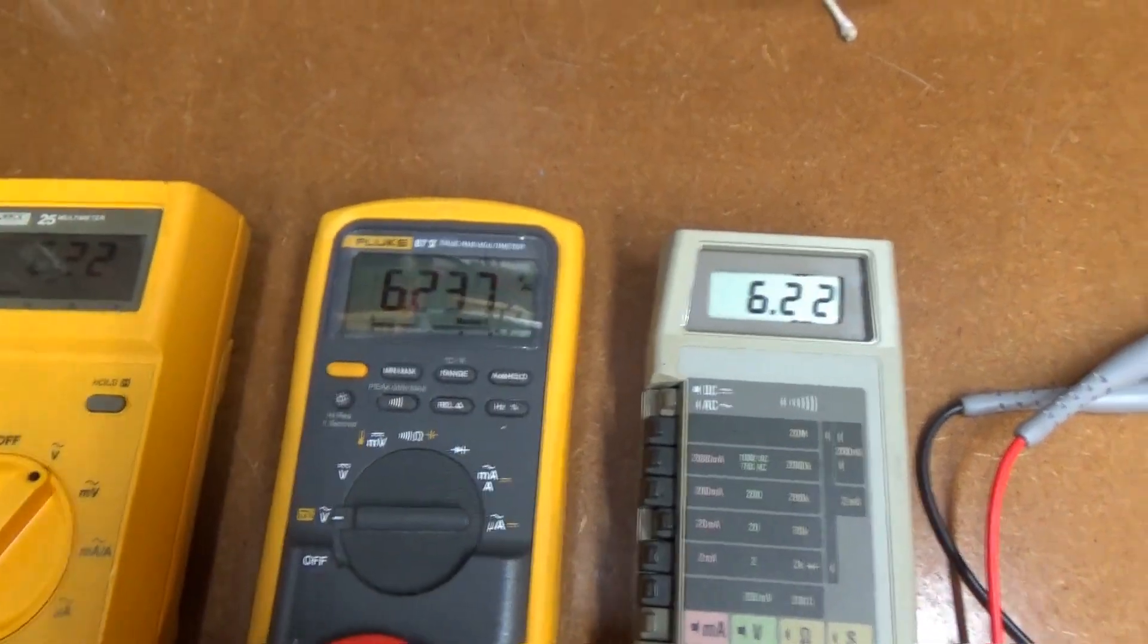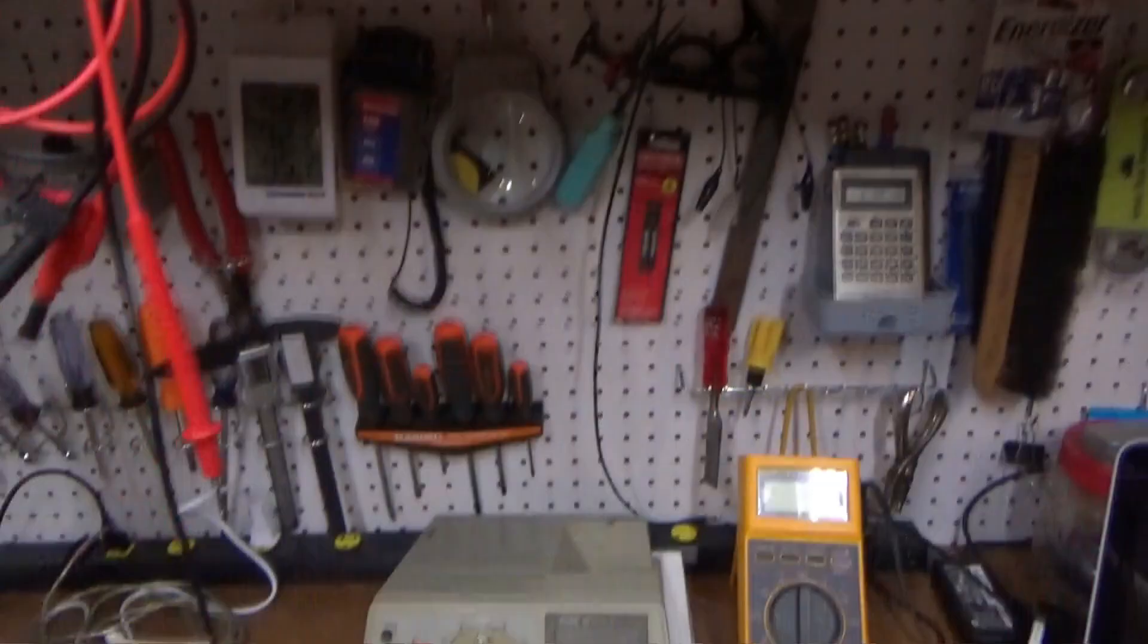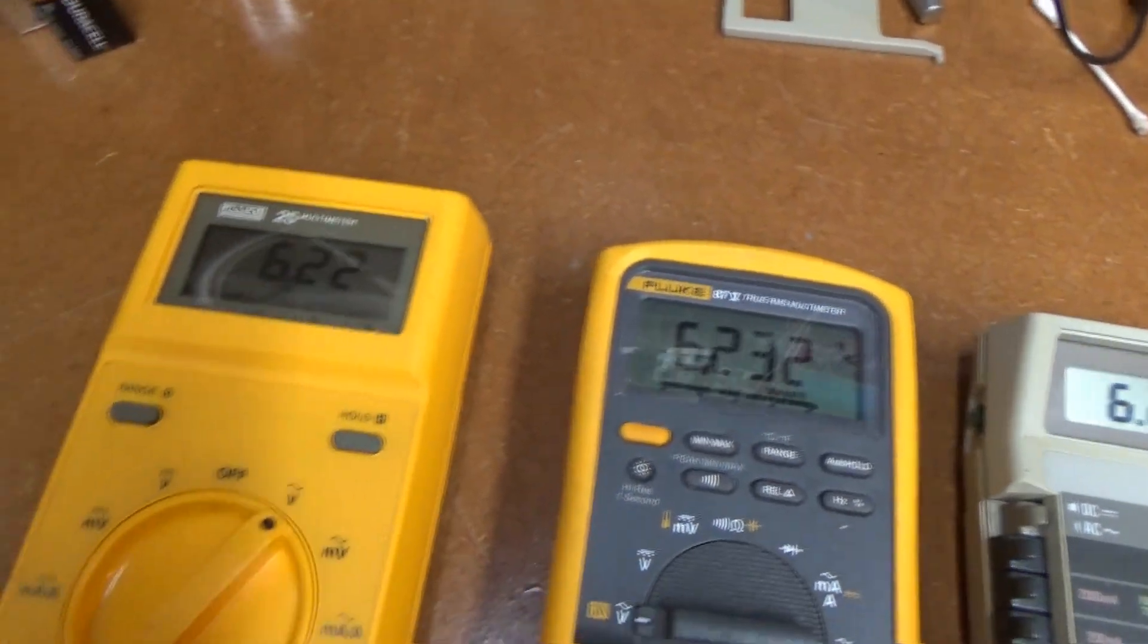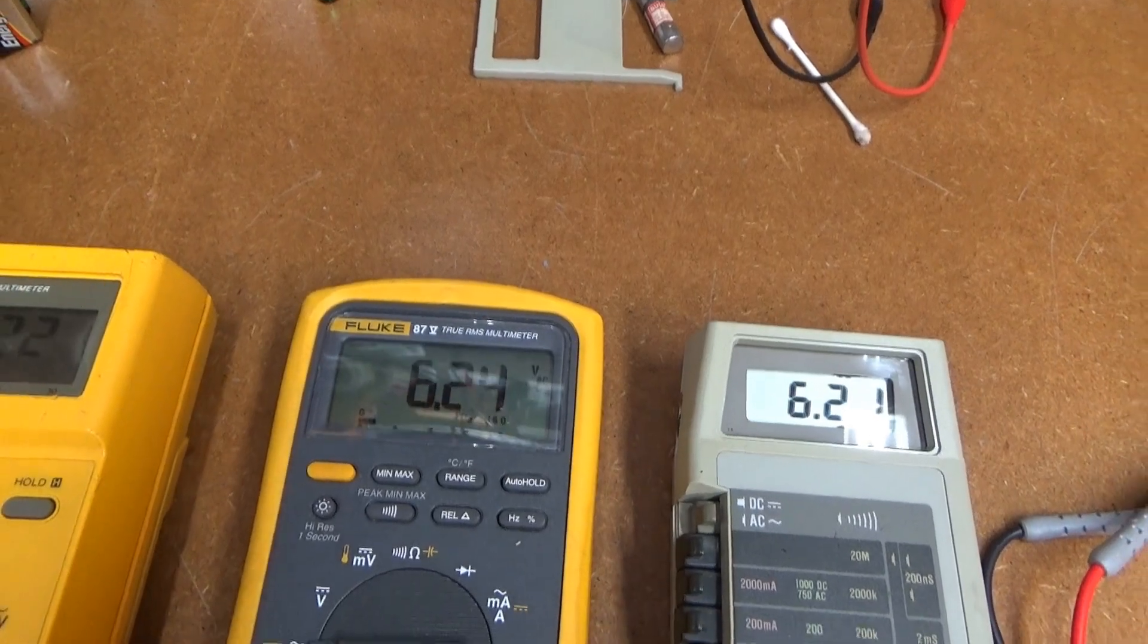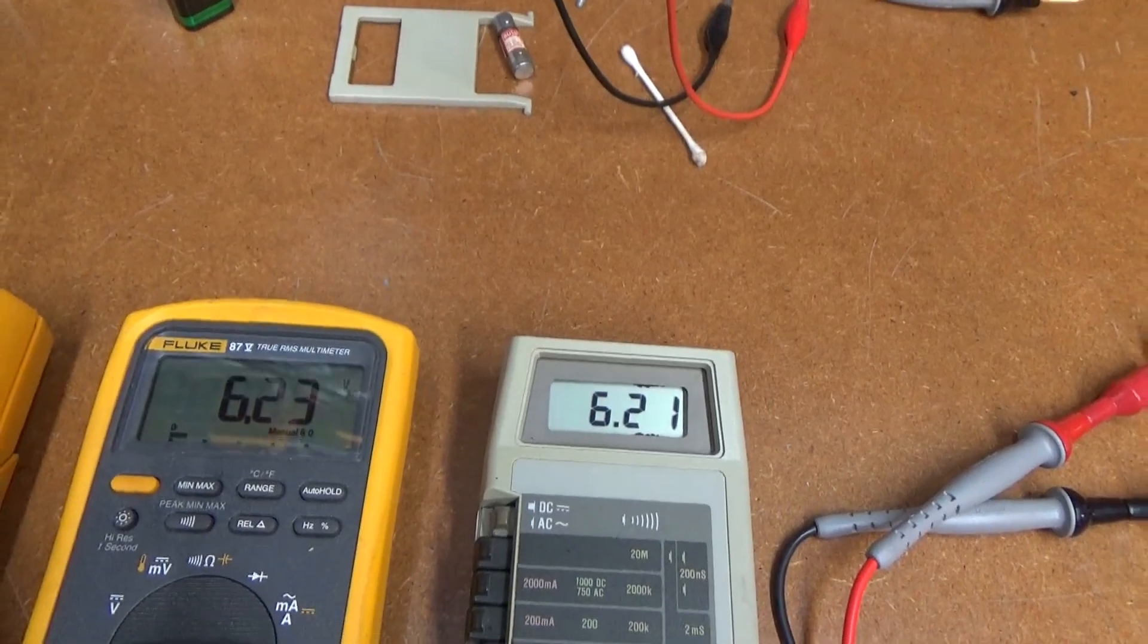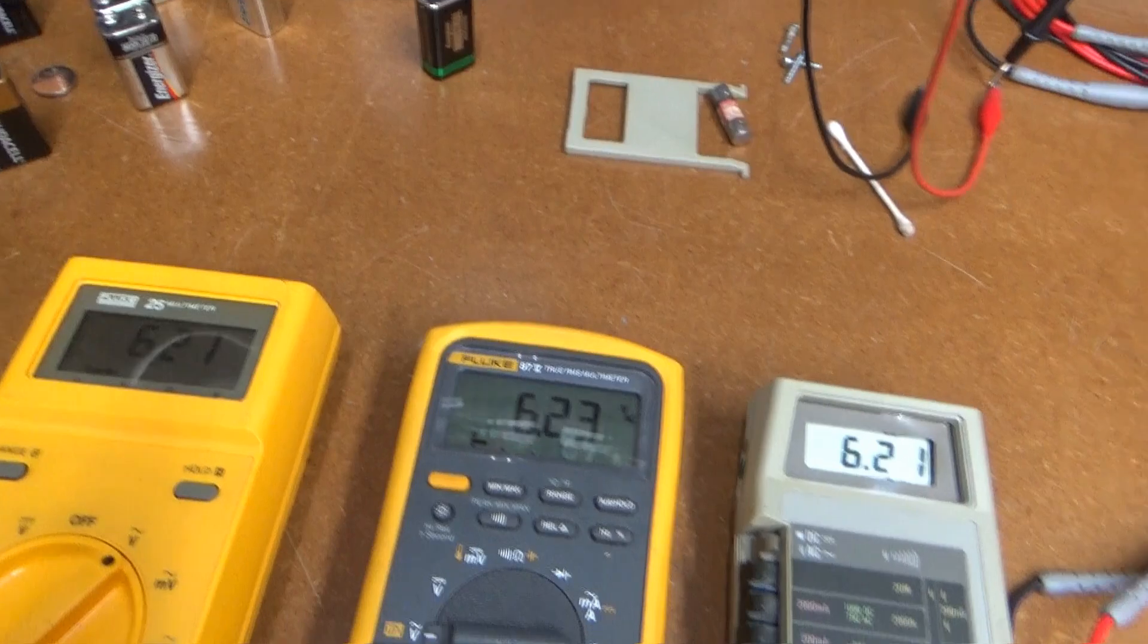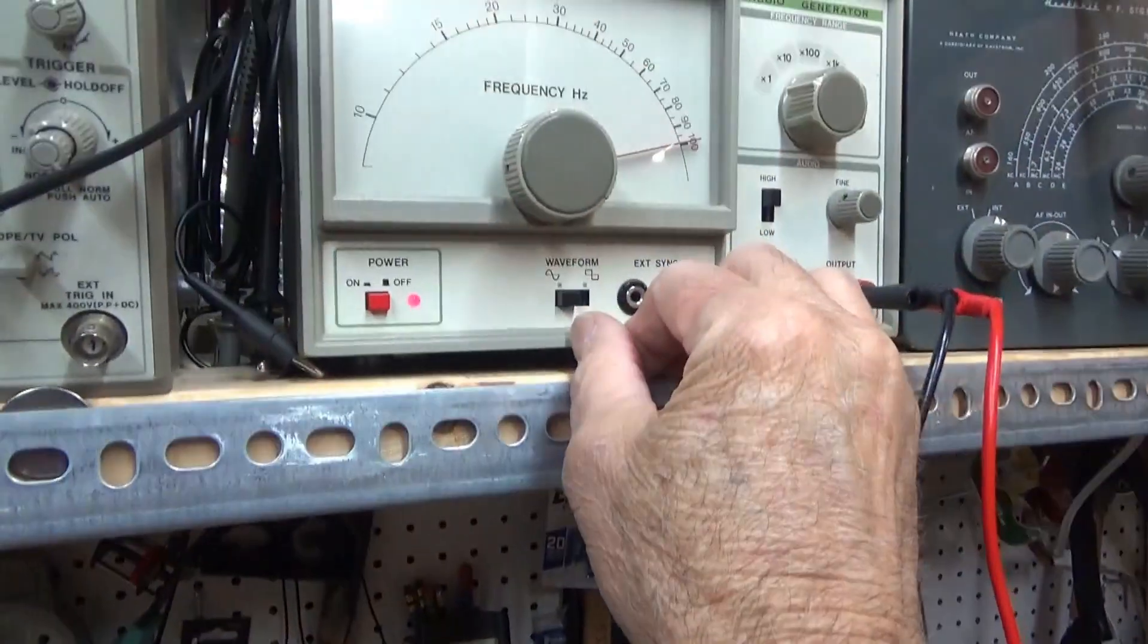Okay, here we go, measuring AC. I'm measuring about 100 hertz, about 6.2 volts, 6.21, 6.22 sine wave. Hit the range here, so this is measuring the same. 6.24, this may be a little bit off. Maybe not, because it's reading the same as this one.